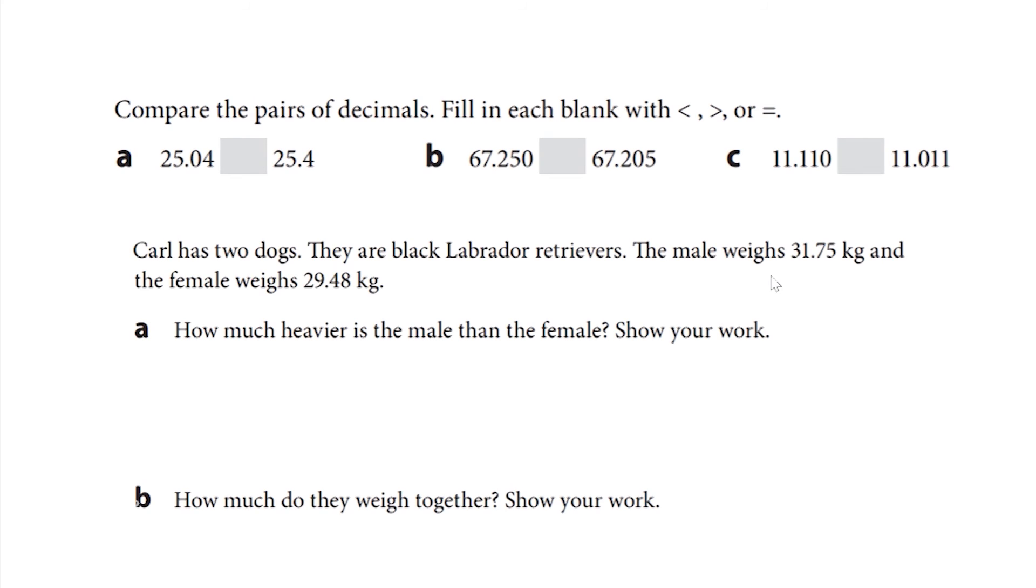And then the second part, Carl has two dogs. They are black Labrador retrievers. The male weighs thirty-one and seventy-five hundredths kilograms and the female weighs twenty-nine and forty-eight hundredths kilograms. How much heavier is the male than the female? Show your work.